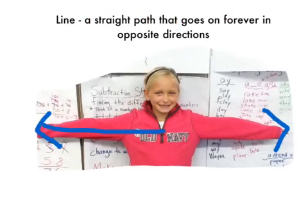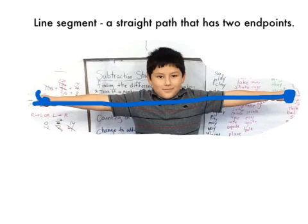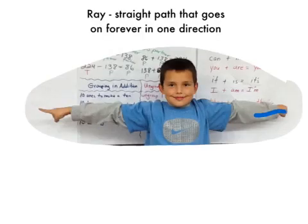A line is a straight path that goes on forever in opposite directions. A line segment is a straight path with two endpoints. A ray is a straight path that goes on in one direction forever.